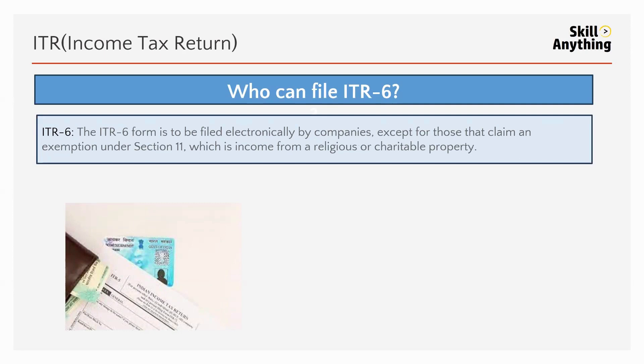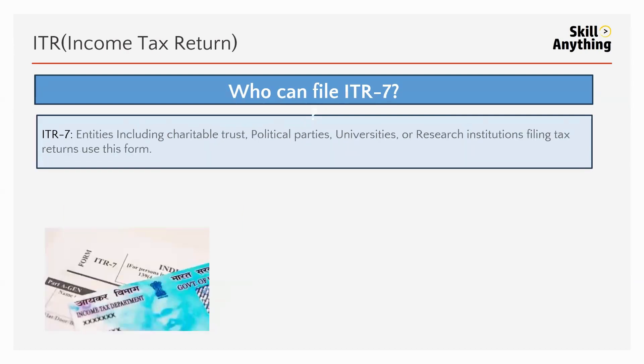Who can file ITR-6? ITR-6 is filed electronically by companies, except those that claim an exemption under Section 11, which covers income from religious or charitable property. So any company except those under Section 11 can file ITR-6.